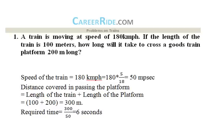Welcome to the quantitative aptitude video from CareerLite. In this video we will be dealing with different kinds of problems from the chapter on trains. The problems of this chapter are very frequently asked in various aptitude examinations conducted all across the nation — by banks, business schools, or government bodies. We will focus on five different kinds of problems which, by the end of this video, will give you coverage of almost 95% of this topic, enabling you to tackle any problem from this chapter.